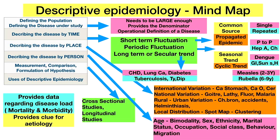Person distribution factors include: age — some diseases follow a bimodal distribution, e.g., Hodgkin's lymphoma occurring in both young and old age, as does leukemia; sex — some diseases are more common in females or males; ethnicity — disease probability varies with Indian, western, or Chinese populations; marital status — unmarried individuals are more prone to certain health problems; occupation — occupational diseases arise from specific work environments; social class — lower social class has more health problems; behavior — smoking, alcoholism; and migration of people from different areas.